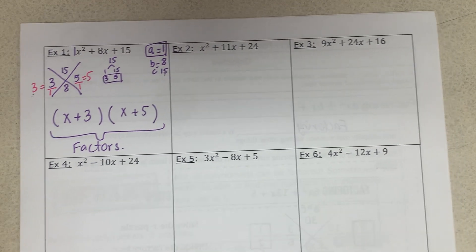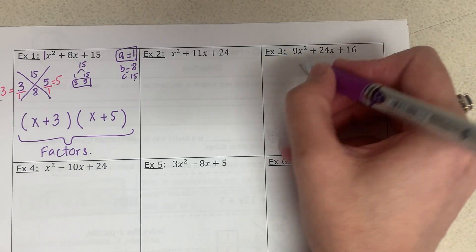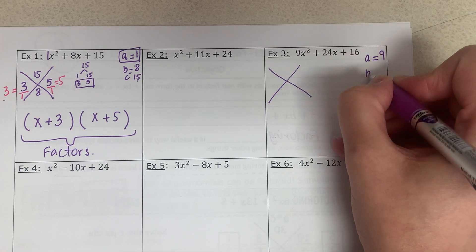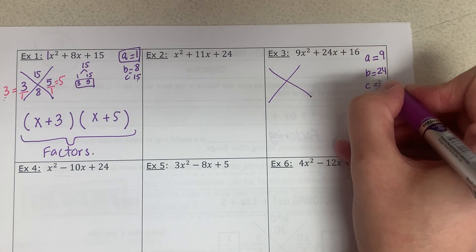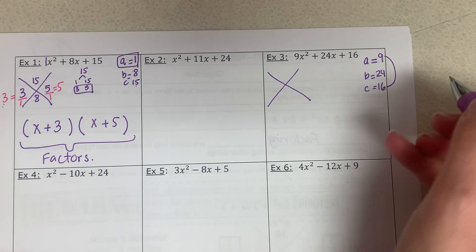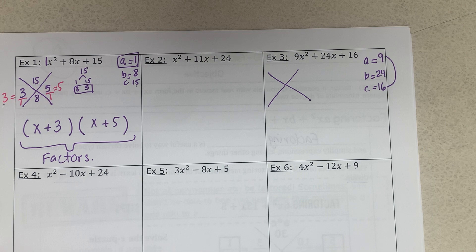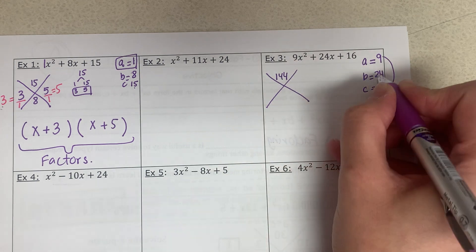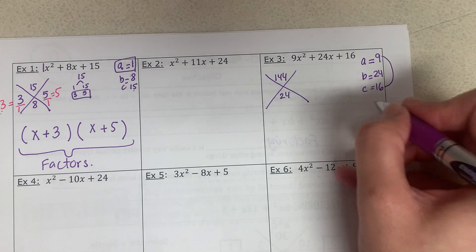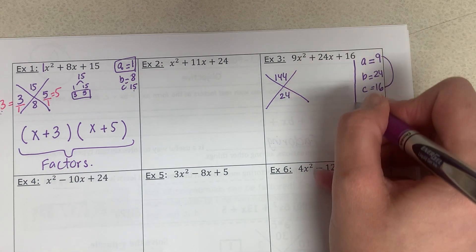I'm going to help with number three — number four you should be able to do by yourself. First, solve the X puzzle: a is 9, b is 24, and c is 16. This involves a longer multiplication because ac is 9 times 16, which is 144. That goes on top, and b — which is 24 — goes on the bottom. I'm going to make a column to find factor pairs of 144.